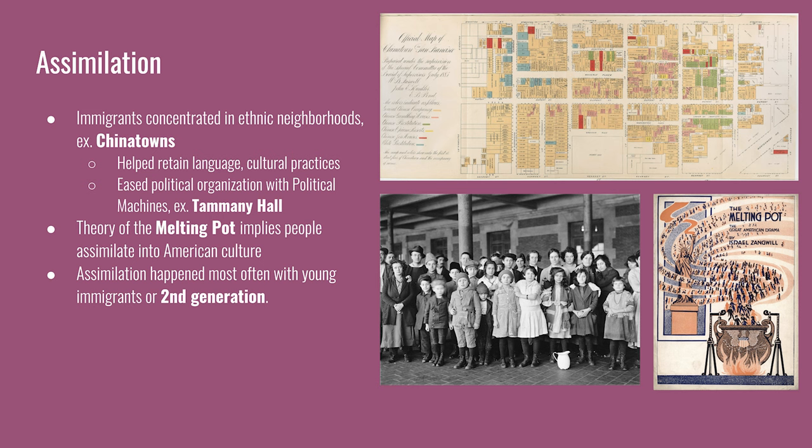When migrants became U.S. citizens after five years, political machines like Tammany Hall took advantage of people living in the same area with a similar background. Political machines would help immigrants settle into new cities, find jobs, and find places to live. They knew that once immigrants became voters, they would remember the organization that helped them acclimate to their new home.